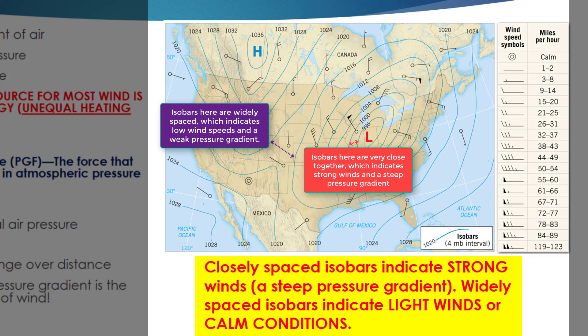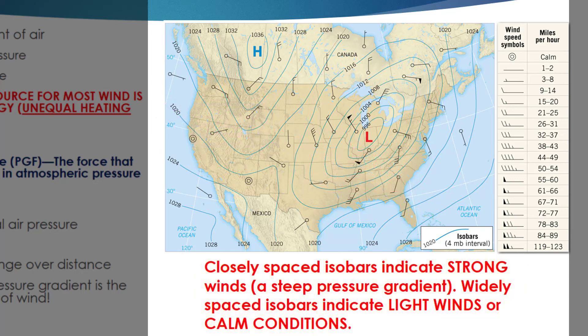Let's focus on some features of this image that you'll likely see on quizzes and tests. Starting with the low pressure center located in western Indiana: winds want to flow from areas of high pressure to areas of low pressure, toward the red L and away from the H. Notice how closely all the isobars are spaced near that red L — that indicates a very steep pressure gradient, and we should expect very high wind speeds in areas around that L.